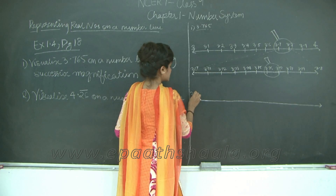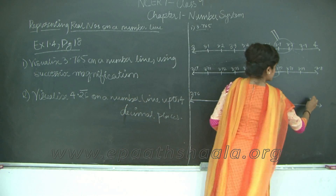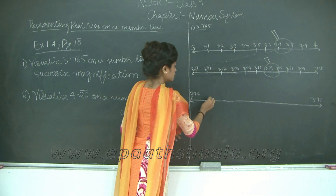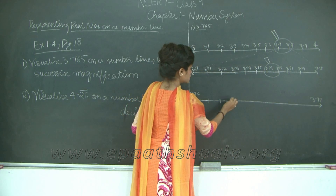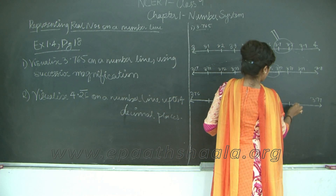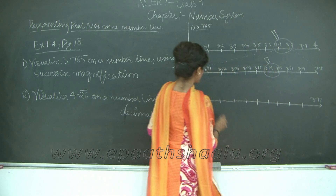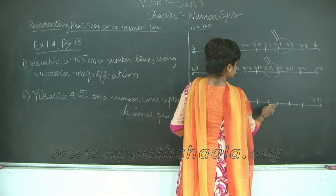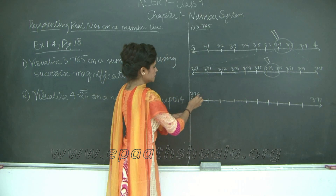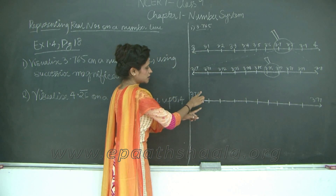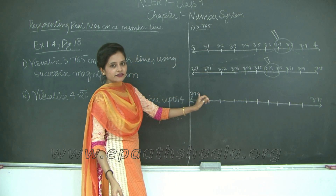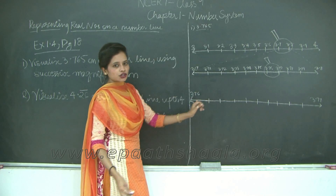Now we need to magnify the section between 3.76 and 3.77. So I write 3.76 here and 3.77. I divide this number line into 10 equal parts using a ruler. So 1, 2, 3, 4, 5, 6, 7, 8, and 9. Each of these numbers will increment by a difference of 0.001.